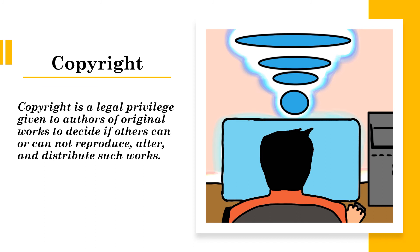What is copyright? A copyright is a legal right bestowed upon the creators of original works to decide how those works can or cannot be copied, modified, and distributed by others. If someone uses or distributes original works in a way contrary to what the creator allows, this is called infringement, and the creator is entitled to seek legal action.